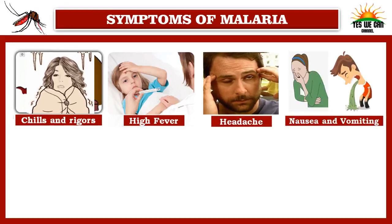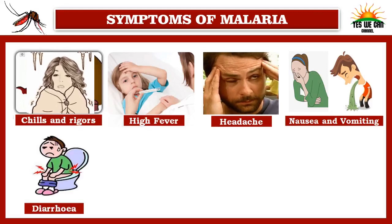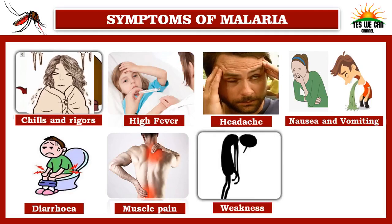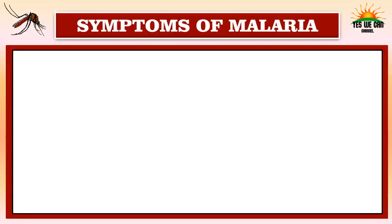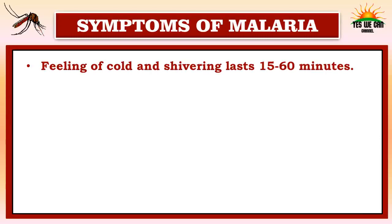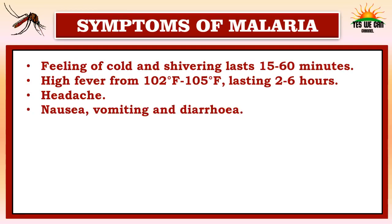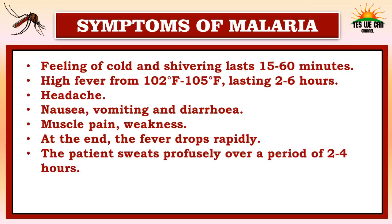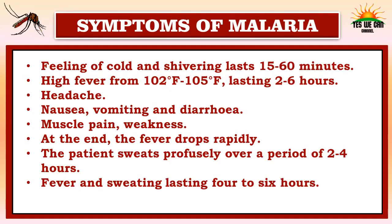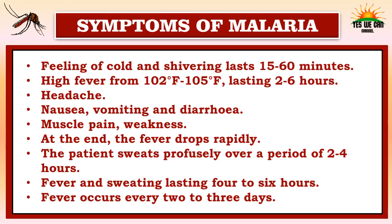Other symptoms include muscle pain, weakness, and sweating profusely. The cycle of fever goes like this: it starts with cold and shivering lasting 15 to 60 minutes, then high fever from 102 to 105 degrees Fahrenheit lasting 2 to 6 hours, accompanied by headache, nausea, vomiting, diarrhea, and muscle pain. At the end the fever drops rapidly and the patient sweats profusely over 2 to 4 hours. Fever and sweating last 4 to 6 hours, and fever occurs every 2 to 3 days.